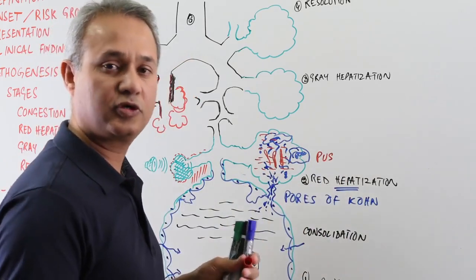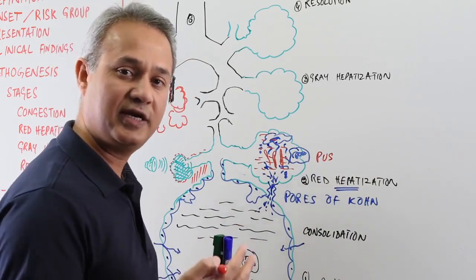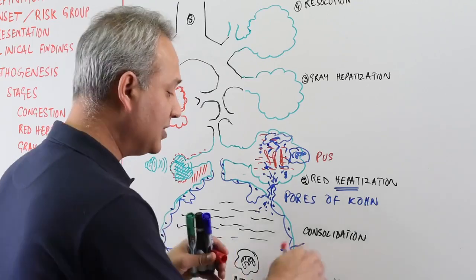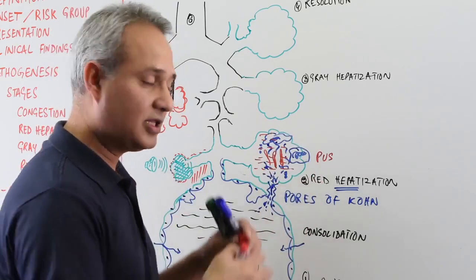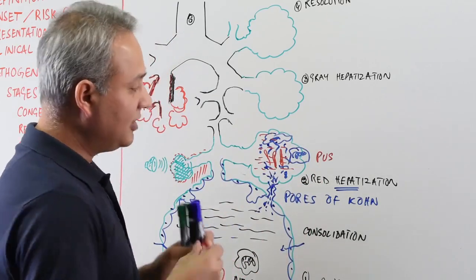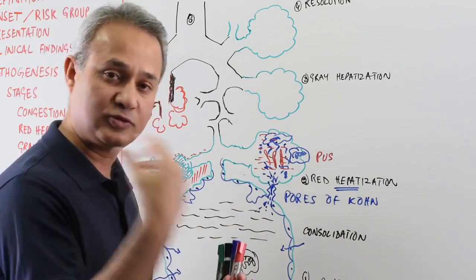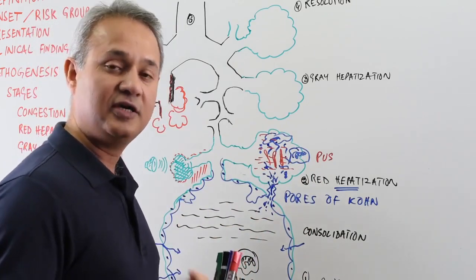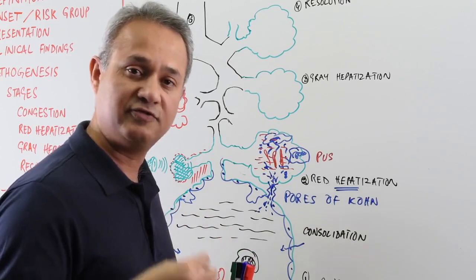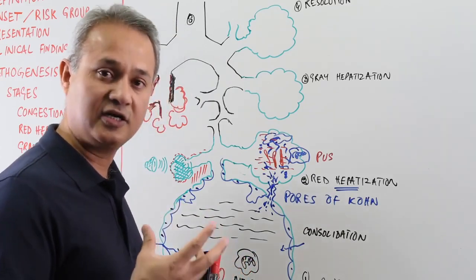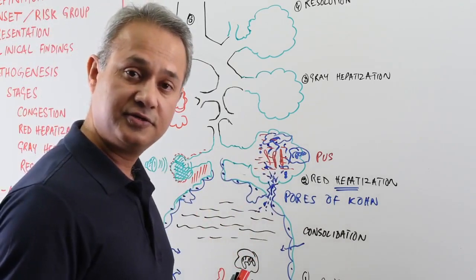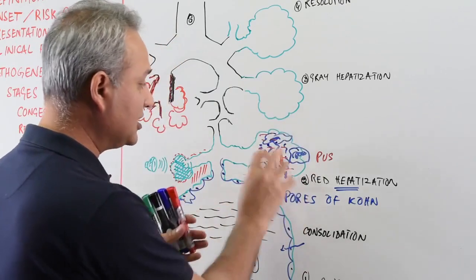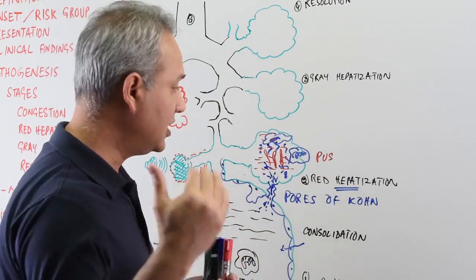What is pus? The broken cells, the debris, the exudates, the transudates, and then the bacterial material, all that is forming pus. So if this patient is now coughing things, what is he going to cough? He is going to cough sputum which is productive, which is yellowish in color, green in color, or even hemoptysis might occur depending upon how much damage and how much bleeding is happening.